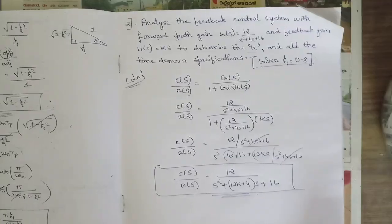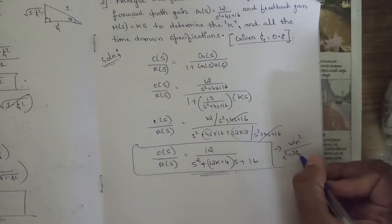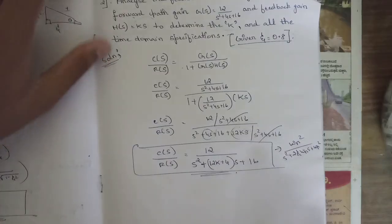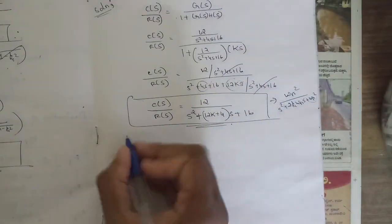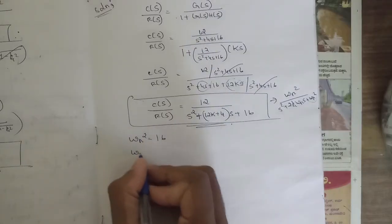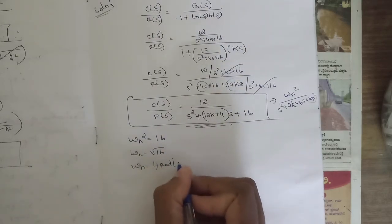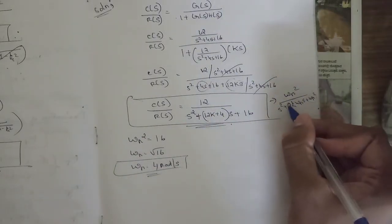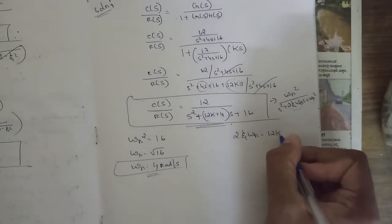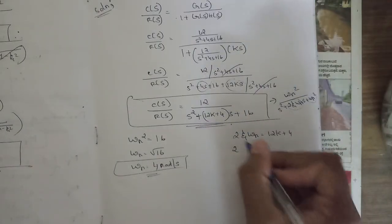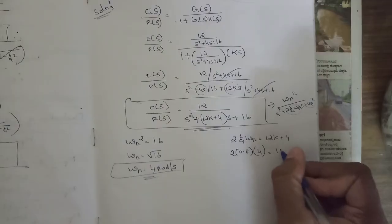Comparing with the standard form ωn² / (s² + 2ζωn·s + ωn²): from the constant term, ωn² = 16, so ωn = √16 = 4 rad/s. From the coefficient of s: 2ζωn = 12k + 4.